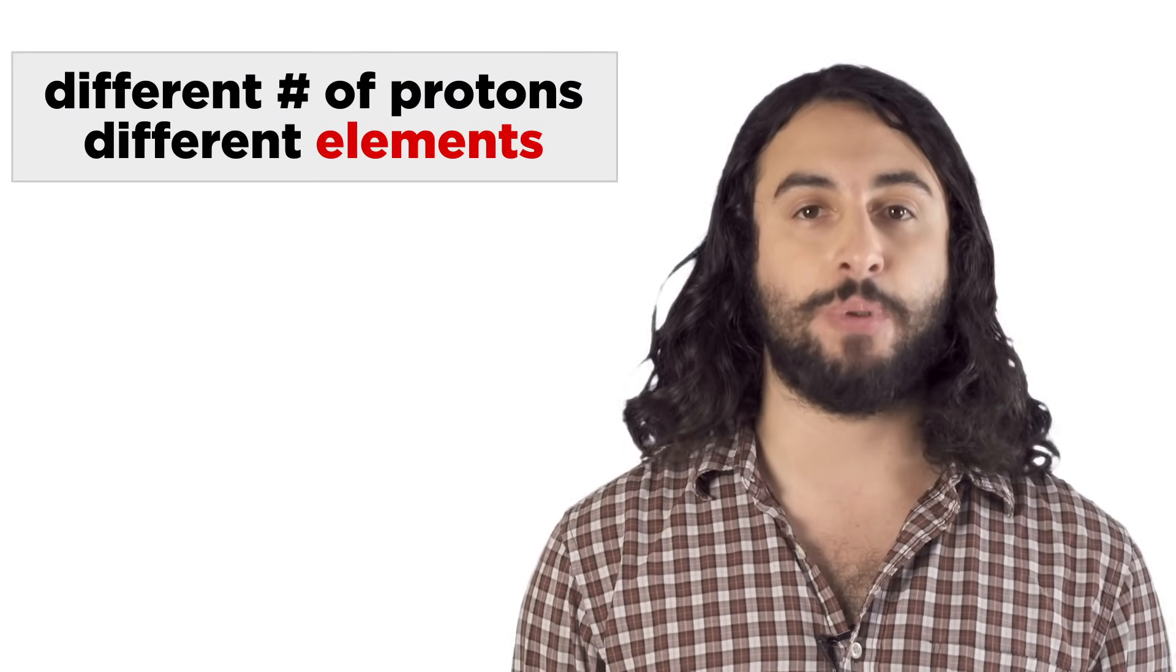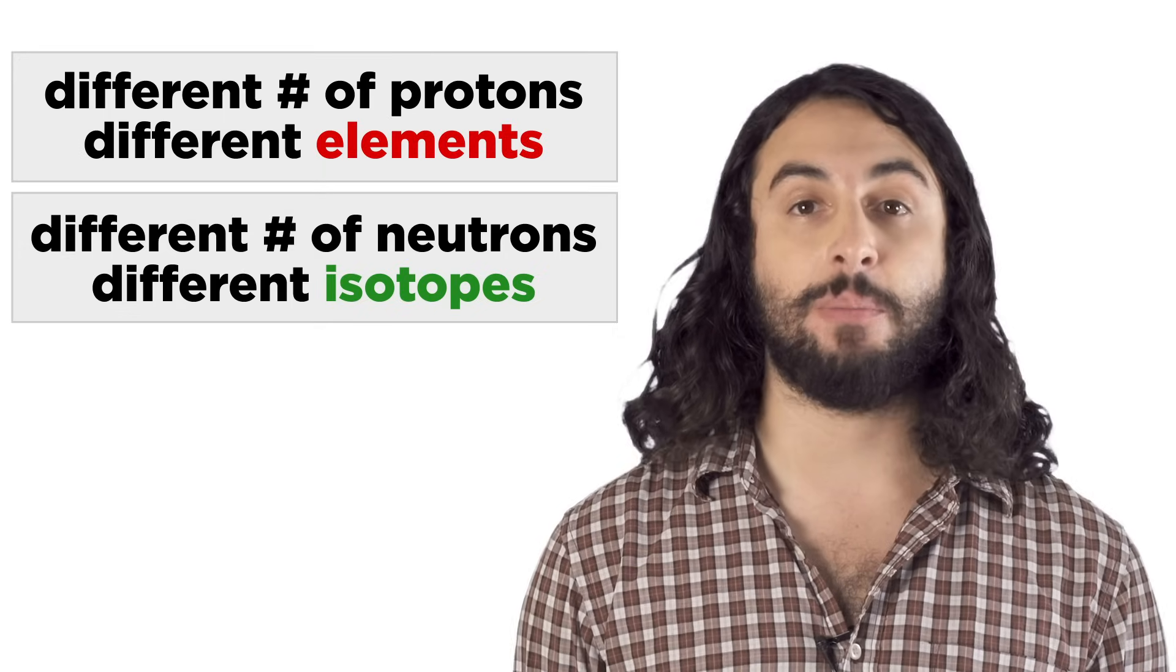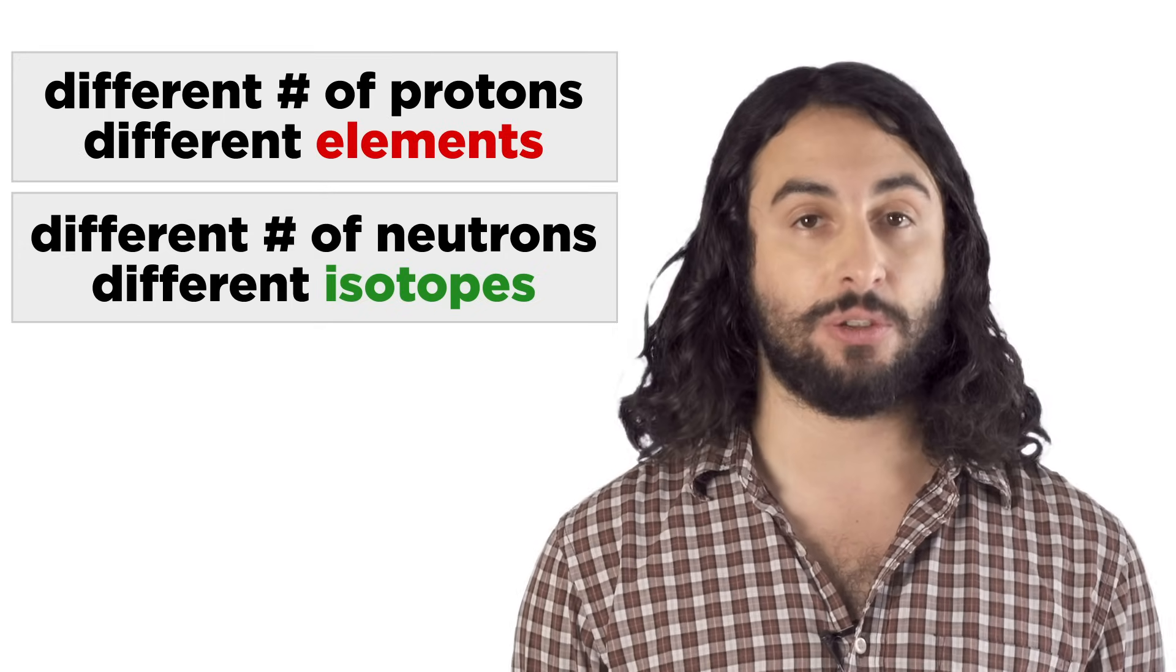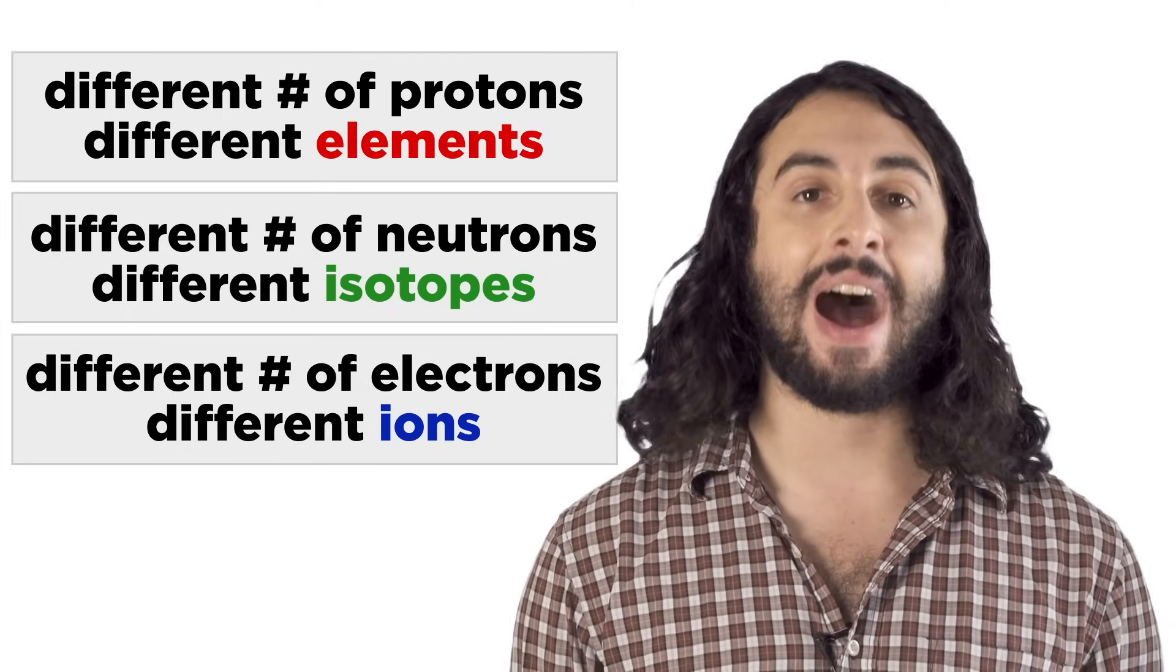So particles with differing numbers of protons are different elements. Particles of a given element with differing numbers of neutrons are different isotopes, and particles of a given element with differing numbers of electrons are different ions.